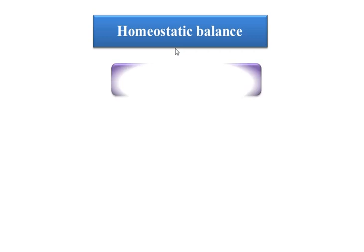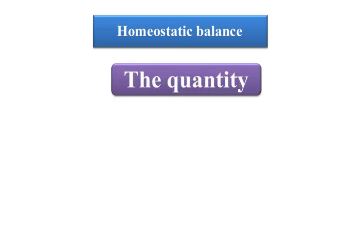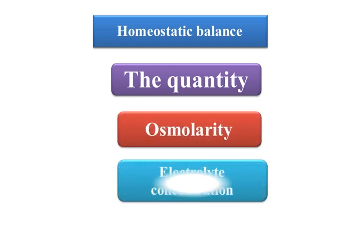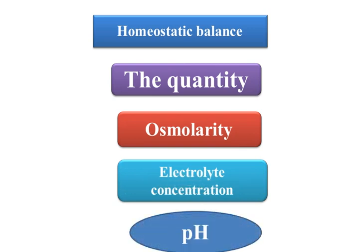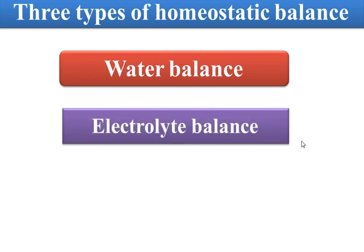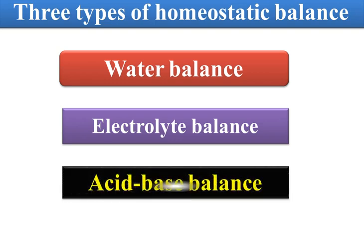The homeostatic balance includes the stability of fluid quantity, osmolality, and electrolyte concentration, as well as the potential of hydrogen ion — what we call the pH. We have three types of homeostatic balance: water balance, electrolyte balance, and acid-base balance. These three must be maintained for a suitable environment for cell function.